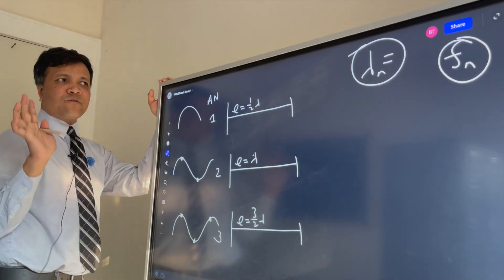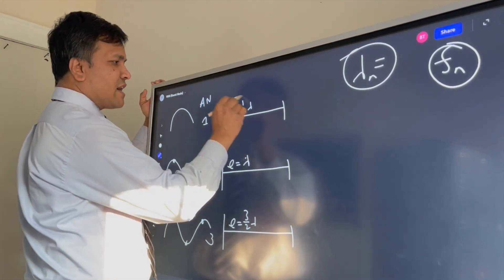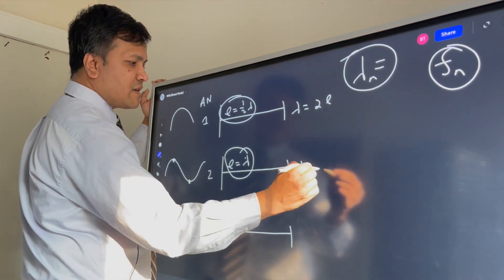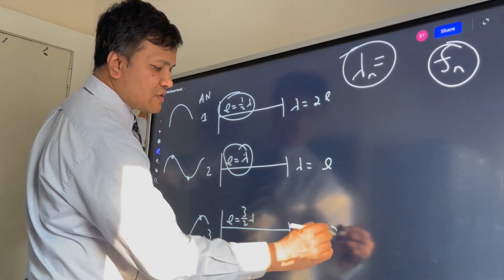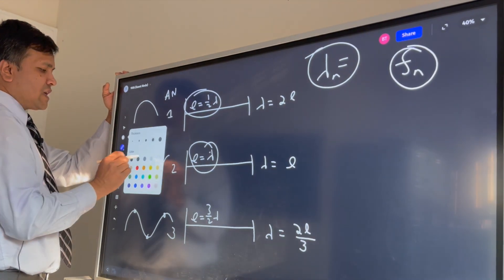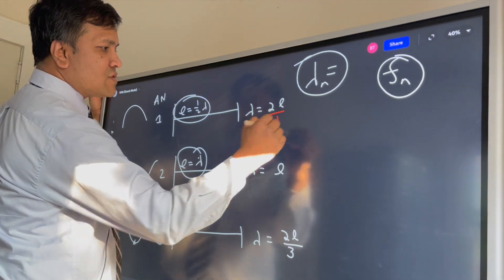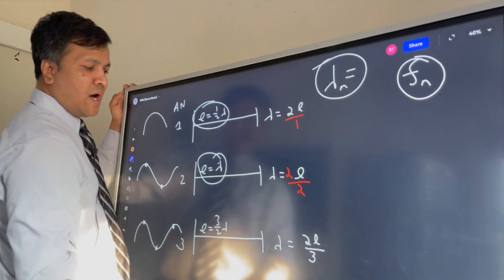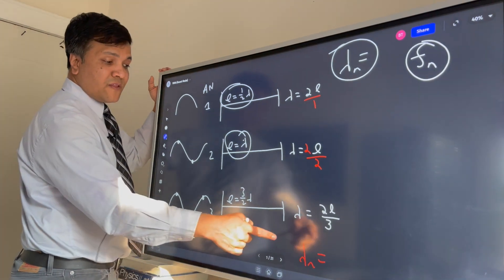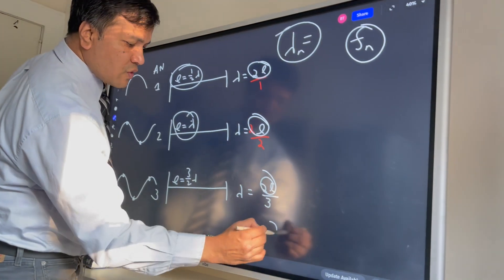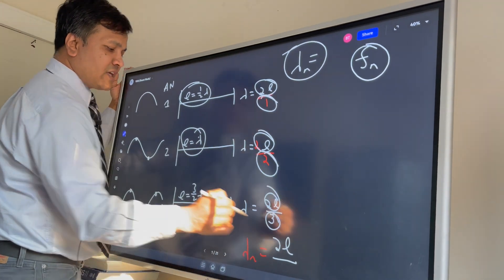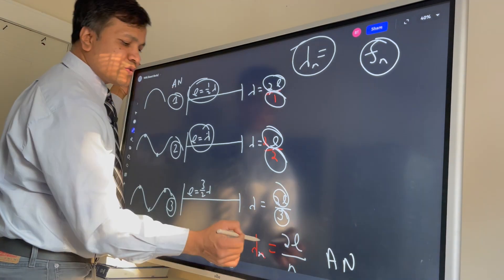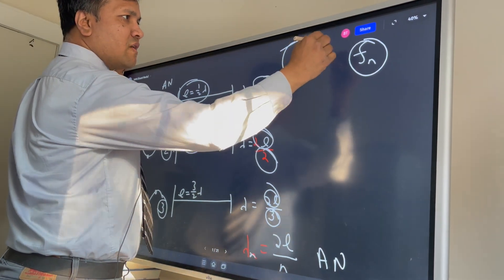Now let's find the general equation. Writing each in terms of lambda: the first gives 2L, the second gives L, and the third gives 2L/3. We can see the pattern — each is 2L over n, where n is the harmonic number (equal to the number of anti-nodes). So the nth wavelength for the harmonic series is λ_n = 2L/n.